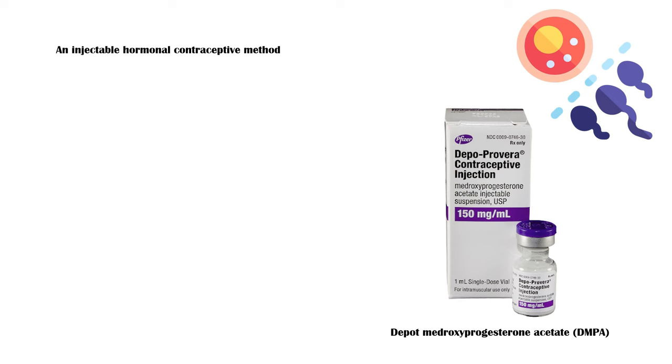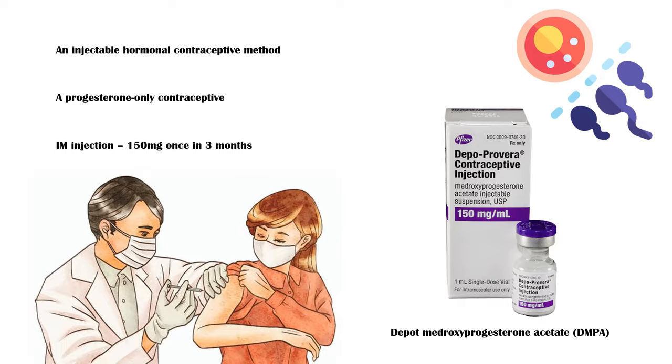It is a progesterone-only injection, which is given intramuscularly once in three months. It should be commenced within seven days of the start of the menstrual period. It is also possible to start it at any point of the menstrual cycle, however, an additional contraceptive method should be used in such instances.